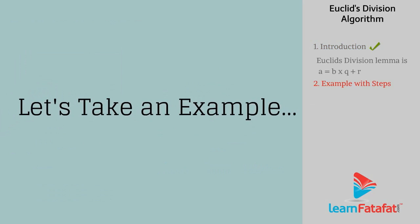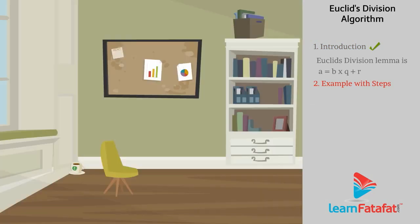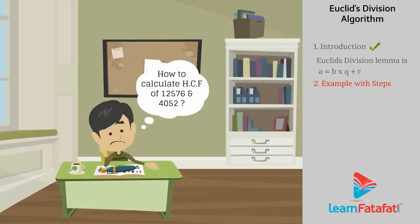Let's take an example. Once, John was trying to calculate the HCF of two numbers, 12576 and 4052.